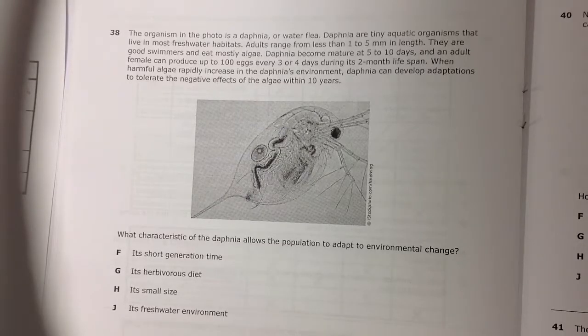Daphnia become mature at 5 to 10 days and an adult female can produce up to 100 eggs every 3 or 4 days during its 2 month lifespan. When harmful algae rapidly increase in the Daphnia's environment, Daphnia can develop adaptations to tolerate the negative effects of the algae within 10 years.